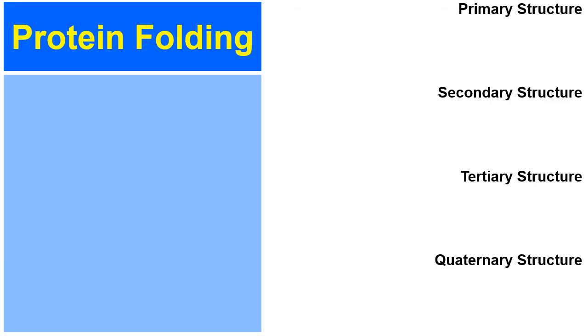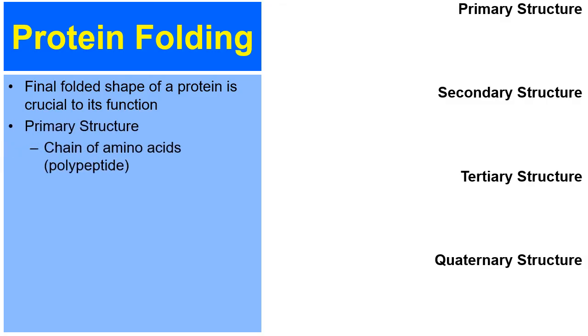Let's talk about how proteins take their shape, how they fold. First of all, the final folded shape of a protein is crucial to its function. If the shape of the protein is irregular, the protein will not perform its function as needed and a disorder could happen. And so there's actually four stages of protein folding. The primary structure of a protein. It's just a chain of amino acids linked together by the ribosome into what's called a polypeptide. And there you have the primary structure.